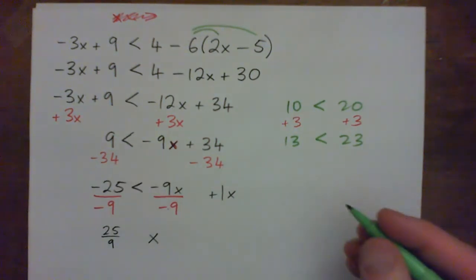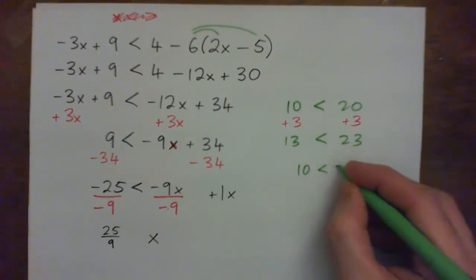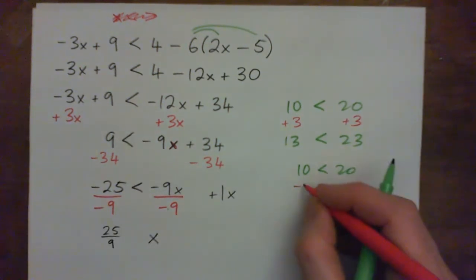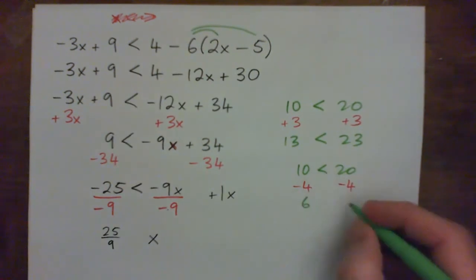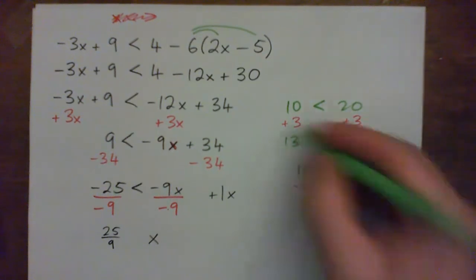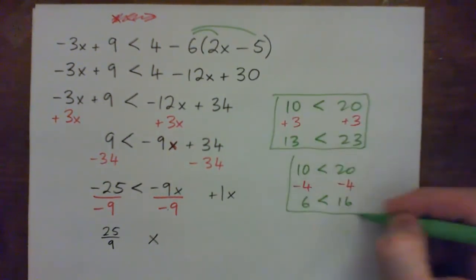When we subtract from both sides it doesn't change either. If you had 10 is less than 20, and you subtract 4 from both sides, you would get 6 on the left, 16 on the right. And this is still less than. So when you add it doesn't change direction. When you subtract it doesn't change direction.